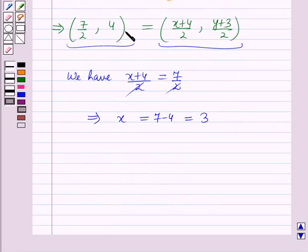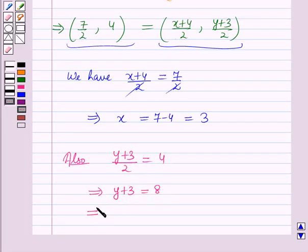Also, equating the y coordinates, we get (y plus 3 by 2) equals 4, which further implies y plus 3 equals 8, which gives y equals 5.